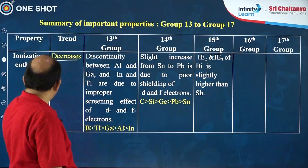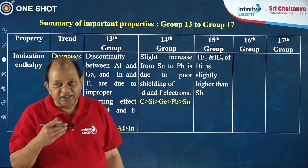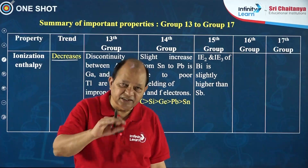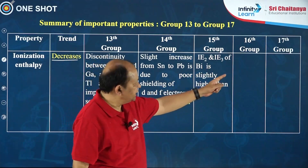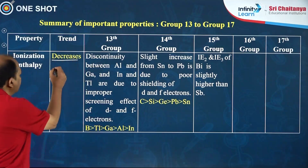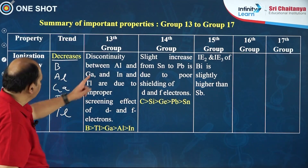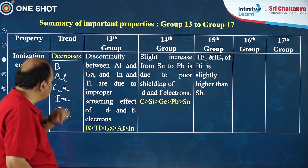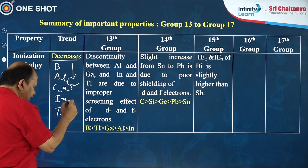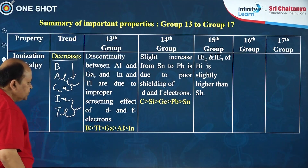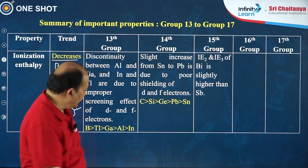The next property is ionization enthalpy — it decreases down the group. The reason is that down the group atomic radius increases, the distance between the nucleus and outermost electron increases, attraction decreases, and therefore with less energy you can knock out the electron. The trend is perfectly followed for groups 16 and 17, but in group 13 — boron, aluminium, gallium, indium and thallium — there is a discontinuity between aluminium and gallium and between indium and thallium. From boron to aluminium it decreases, but from aluminium to gallium there is an increase. Similarly, from indium to thallium there is also an increase. The increase in ionization enthalpy contrary to the group trend is due to the improper shielding of D and F electrons, and this is the actual order.